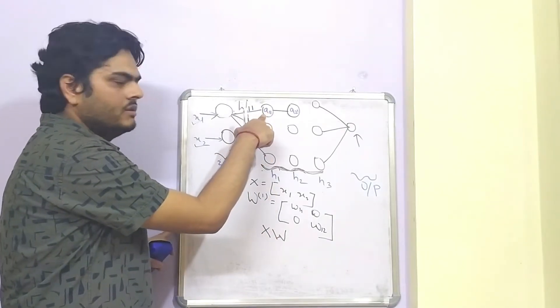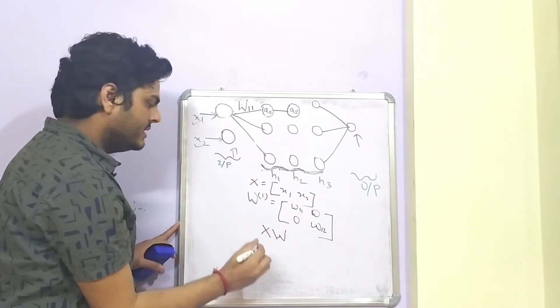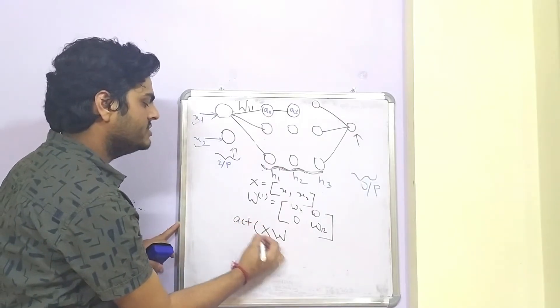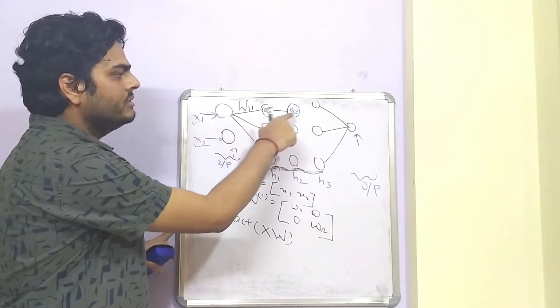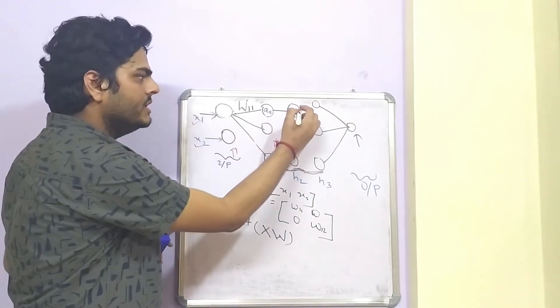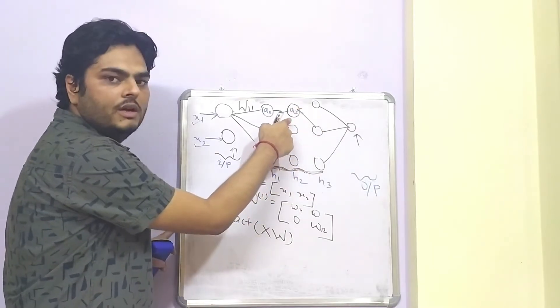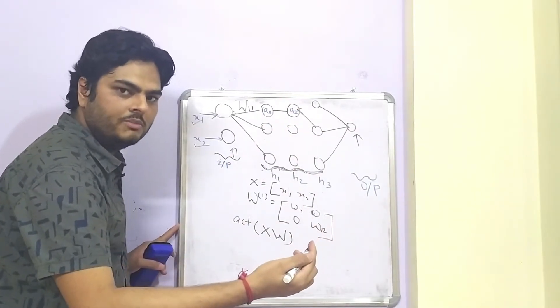For now, we are not considering this b term, the bias term for simplicity. So, input to this will be just a multiplication of x and w. From here, an activation function will get applied on this. So, let us write activation of this. Now, this will go as an input to this node here. Again, one activation function will get applied.